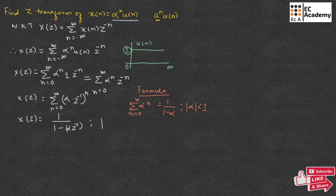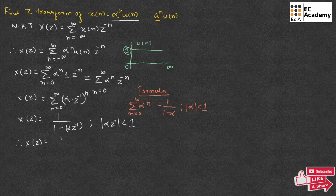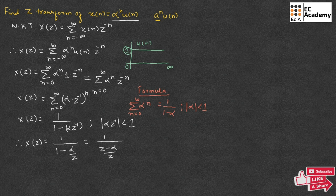Using this formula, X(z) = 1 divided by (1 minus alpha z^(−1)), where the magnitude of alpha z^(−1) must be less than 1. We can rewrite z^(−1) as 1/z, giving 1 divided by (1 minus alpha/z). Taking LCM, this becomes 1 divided by (z minus alpha)/z, so X(z) = z divided by (z minus alpha). This is the Z-transform of the given x[n].